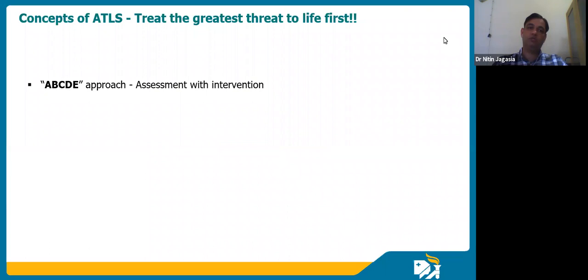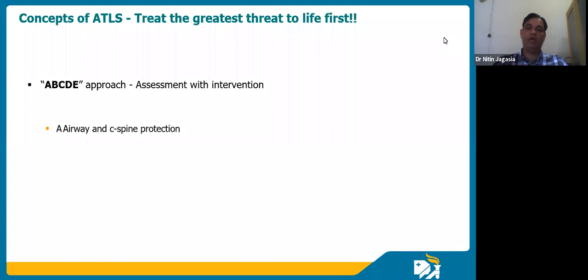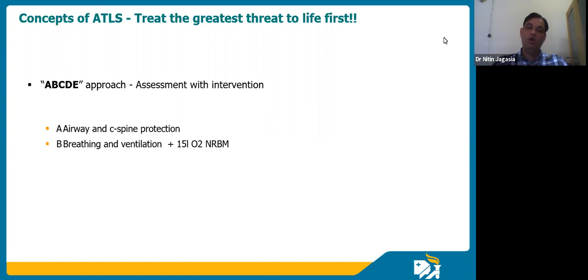This comes from ATLS, founded in 1977, which says: treat the greatest threat to life first. Fortunately, it's a simple ABCDE approach. A is airway — in trauma, always with C-spine protection, collar, blocks, and tape — the 'holy trinity.' B is breathing with ventilation, always giving maximum oxygen: 15 liters via non-rebreather mask.